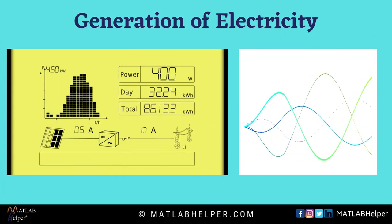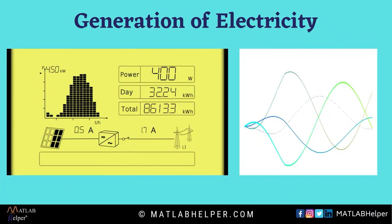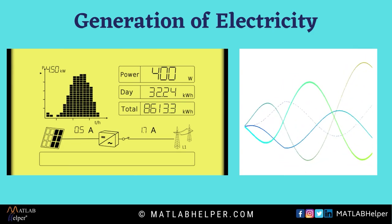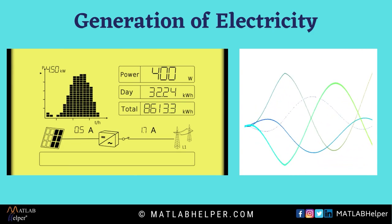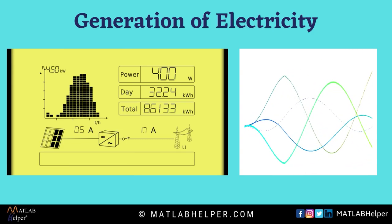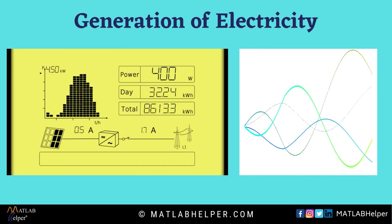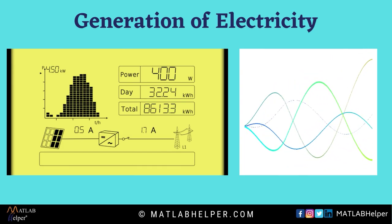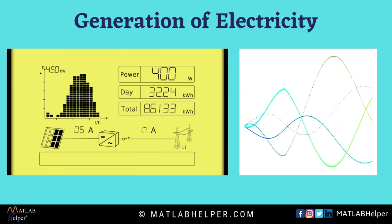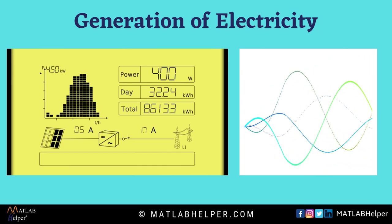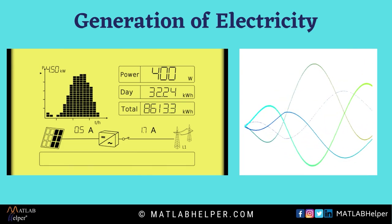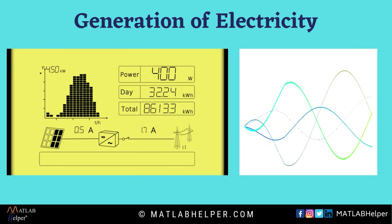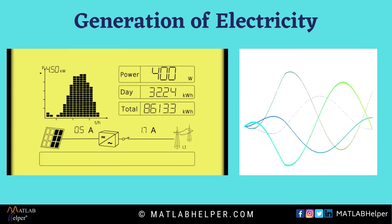However, the output generated by the photovoltaic cell is not suitable or sufficient to power up household appliances. Some changes and modifications need to be done to create the final output as a 220 volts AC sine wave used in households.